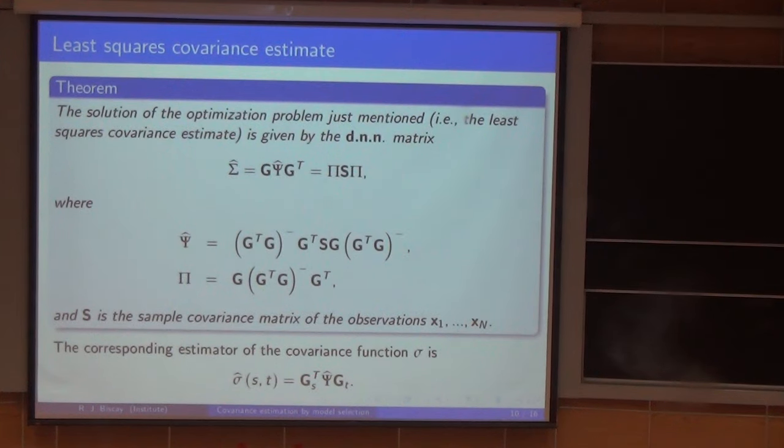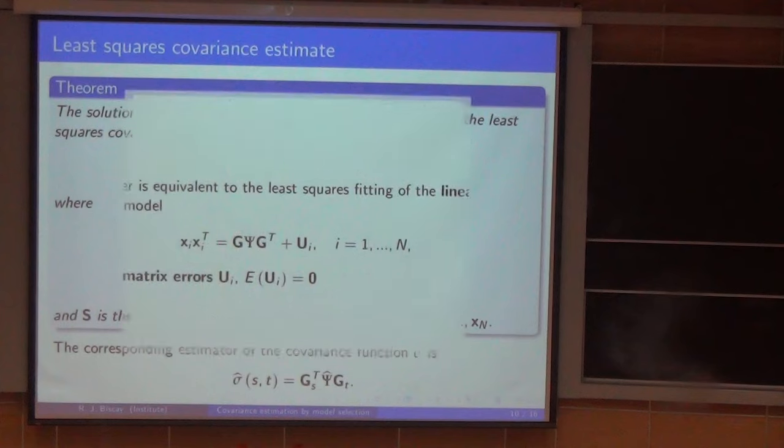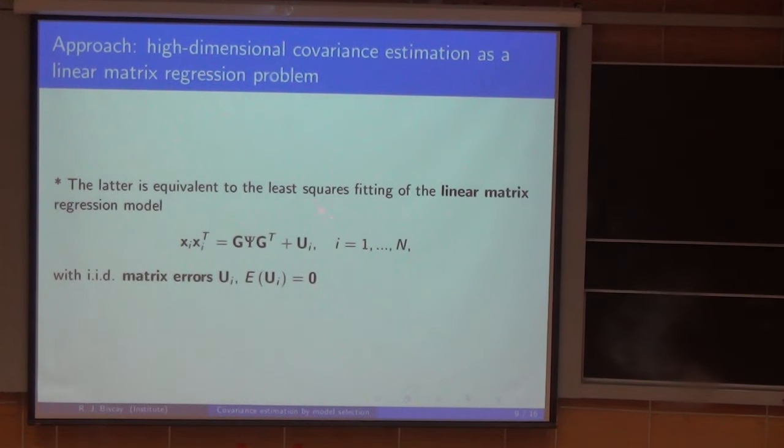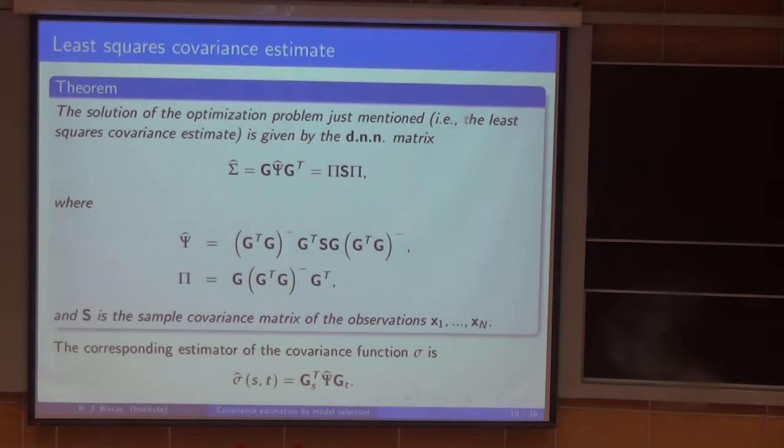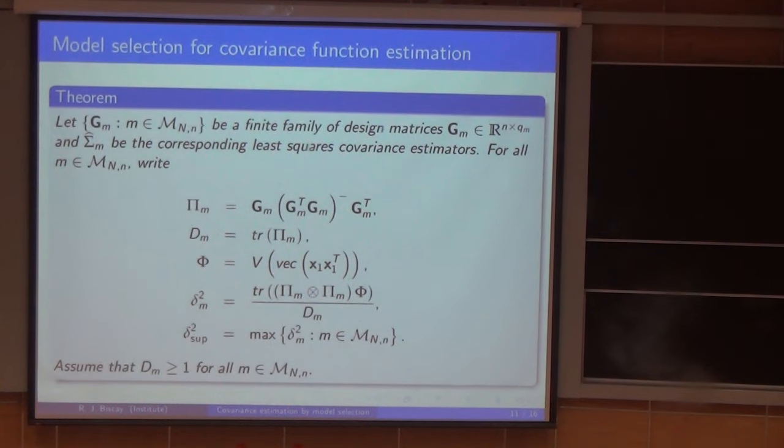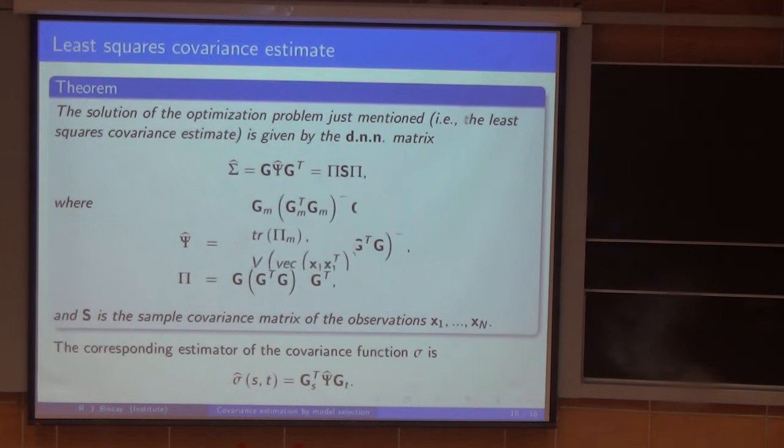But in cases where we have a very large number of points, arises the problem of how to determine the number of basic functions. You see that this is simply a linear regression model. We can try to extend model selection techniques from the standard linear model to this new setting. New setting because this is matrix-valued and the errors are not independent, they have a covariance structure. And the main thing about this is the basis.